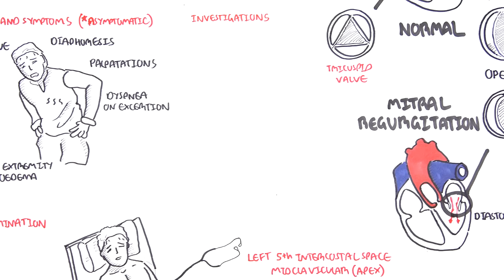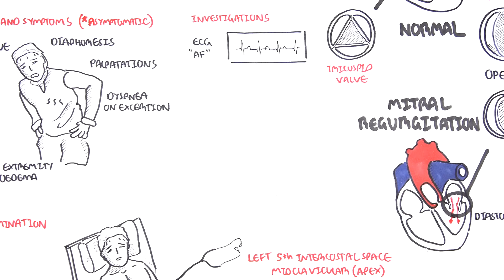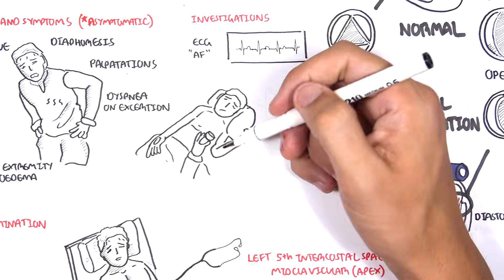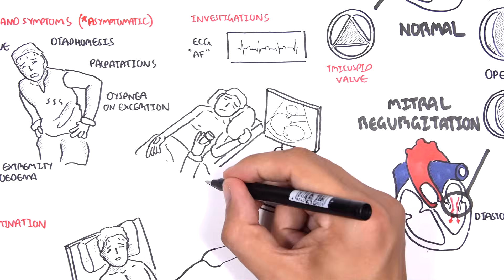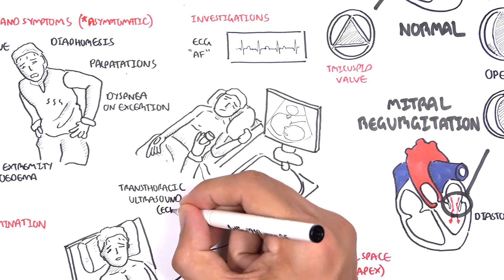Investigations that can be performed include an ECG, which may show signs of atrial fibrillation. AF, atrial fibrillation, is characterized by absent P waves with irregularly irregular rhythm pattern. The gold standard for assessing and identifying valvular heart disease is by using ultrasound, echocardiograms.